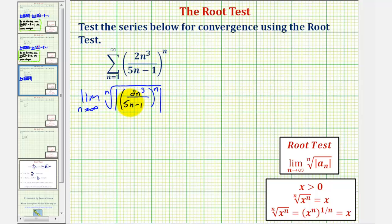So notice how the radicand is a perfect nth root, and we know it's positive. So when we take the nth root of this raised to the nth power, it simplifies perfectly to just one factor of two n cubed divided by the quantity five n minus one. So we have the limit as n approaches infinity of, again, two n cubed divided by the quantity five n minus one.